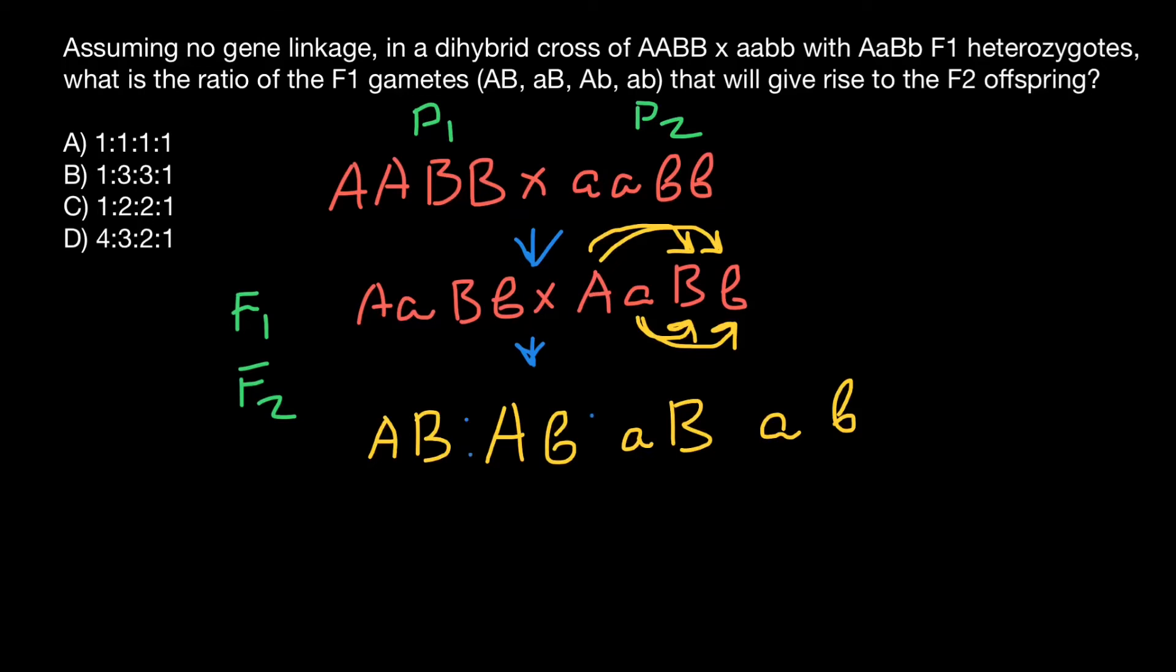As you see, the probability of each type of gamete is going to be the same, so we have a 1 to 1 to 1 to 1 ratio. This is answer A. To be clear, this is not the genotype of the F2 generation. This is genotypes of the gametes of the F1 generation, and this is the question of the problem.